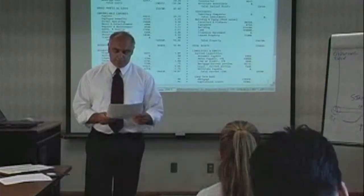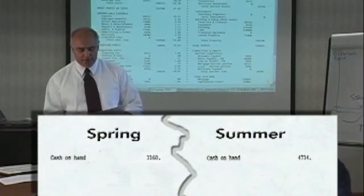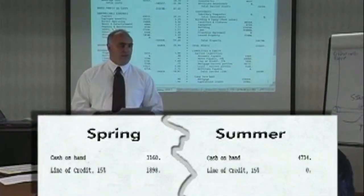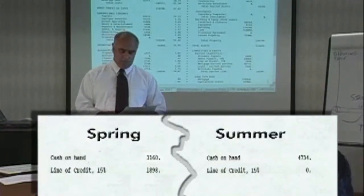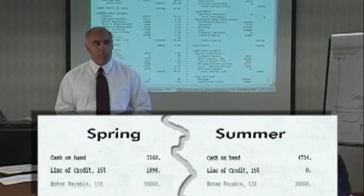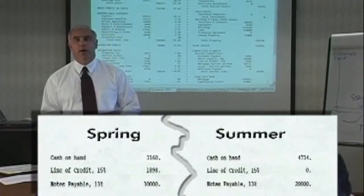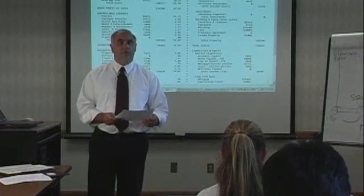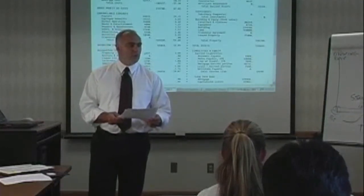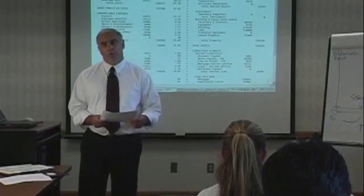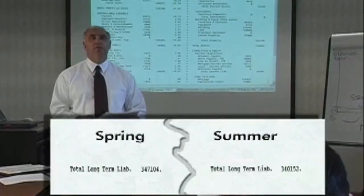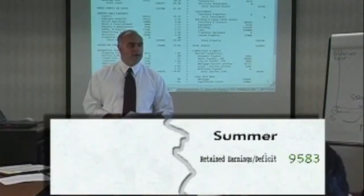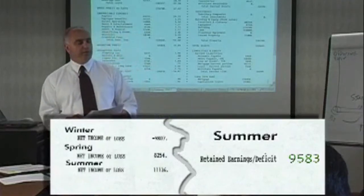Reviewing the balance sheet accounts, we note that we are accumulating a little more cash on hand. An audit of the line of credit account shows we now have a zero balance. The improved operations resulted in payoff of the line of credit, and the note payable account has been reduced by $10,000 — a $10,000 payment was made during the summer quarter, reducing its balance from $30,000 to $20,000. An audit of total long-term debt confirms we continue to make good those payments. The retained earnings account now shows a positive balance of $9,583, which is the sum of the three quarters' profit after tax.